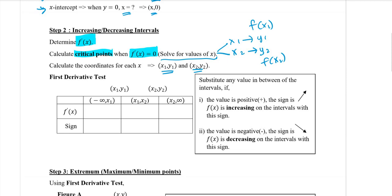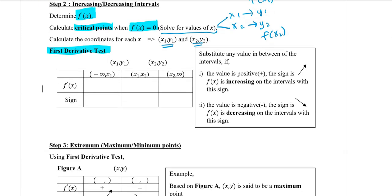We will be using the first derivative test to determine the increasing or decreasing interval. For the first derivative test, we write the values of x1 and x2 as borders. The interval notation will start from negative infinity to x1, then x1 to x2, and then x2 to infinity. You need to write f'(x) in the second row.